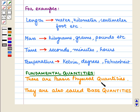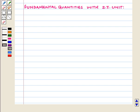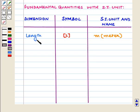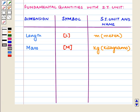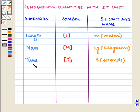Fundamental quantities are basic physical quantities and they are also called base quantities. Following are the fundamental quantities along with their SI unit. The first is length, whose symbol is capital L in square brackets and the SI unit is meters. Then is mass, whose symbol is capital M in square brackets and the SI unit is kilograms. Then is time, whose symbol is capital T in square brackets and its SI unit is seconds.